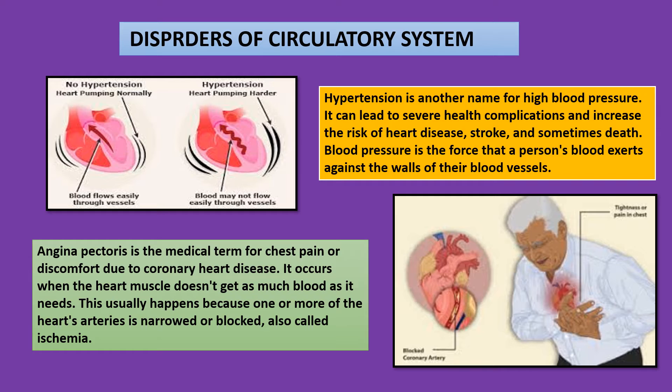The second disorder is angina pectoris. Angina pectoris is the medical term for chest pain or discomfort due to coronary heart disease. It occurs when the heart muscle doesn't get as much blood as it needs. This usually happens because one or more of the heart's arteries is narrowed or blocked, also called ischemia. In the second picture, I have shown the effects of angina pectoris on the circulatory system.